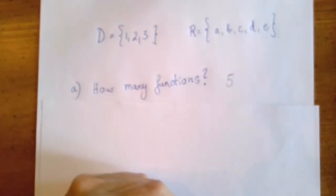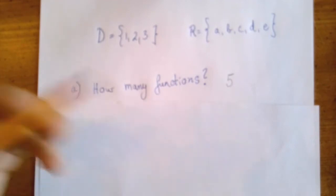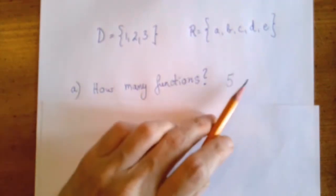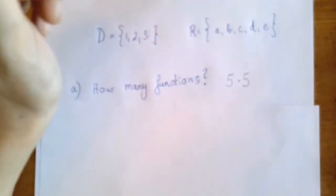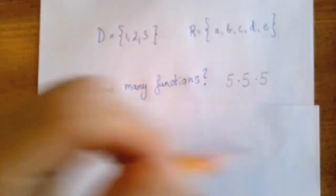And then what about two? It's literally the same story. We can assign to it either A or B or C or D or E. Similarly with number three, we multiply these three.